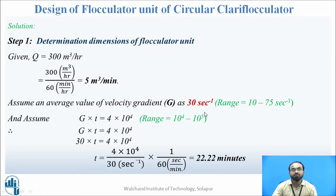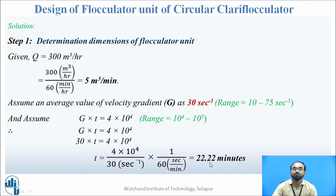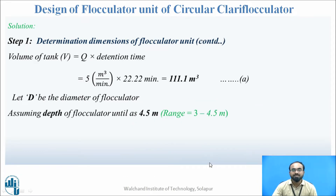We also assume Gt to be 4 × 10⁴; it can be between 10⁴ to 10⁵. Since we know G and Gt, we calculate retention time t: 30 × t = 4 × 10⁴, giving t ≈ 22.22 minutes. With retention time and discharge known, we calculate volume using V = Q × t: 5 × 22.22 = 111.1 cubic meters.